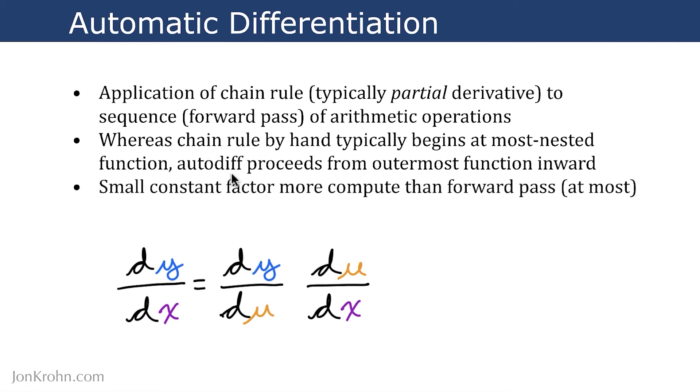Automatic differentiation is a really computationally convenient approach. It has only a small constant factor more computational complexity than the forward pass itself. So if the forward pass allows us to go from x to u and then from u to y in that chain of two functions, then this automatic differentiation backwards from y through to x that allows us to calculate the derivative of y with respect to x